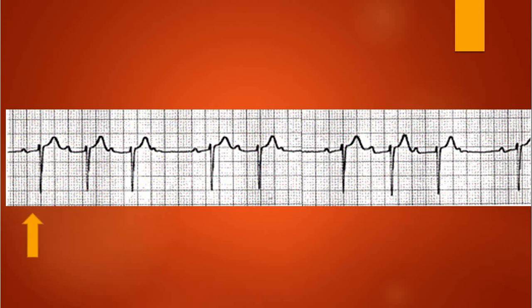So let's have a look at this one. As you can see, it will give you three complexes right at the beginning and then it's going to drop a complex. But look at what it does in between there — as you can see right here, you have a pretty long PR interval, and then you have another one.